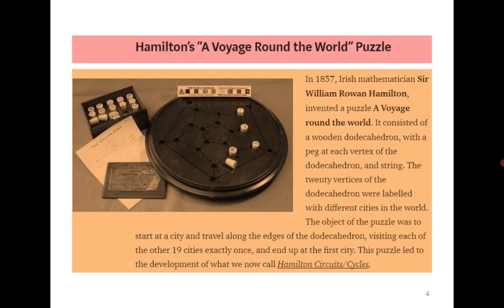It was introduced by William Hamilton who introduced a puzzle called 'A Voyage Around the World.' In this puzzle, there were 20 vertices labelled as different cities. The object of the puzzle was to start at a city, travel along the edges, visiting the other 19 cities exactly once, and end up at the first city. This is how the concept of Hamiltonian circuits and cycles came into the picture.